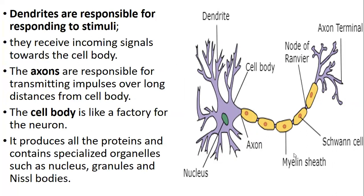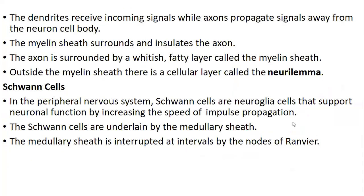In this picture, the Schwann cells are shown here. These Schwann cells actually synthesize the axon sheath in terms of injury, and that is what happens in the peripheral nervous system.